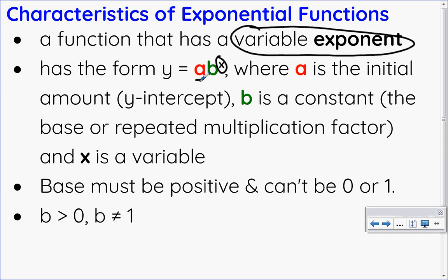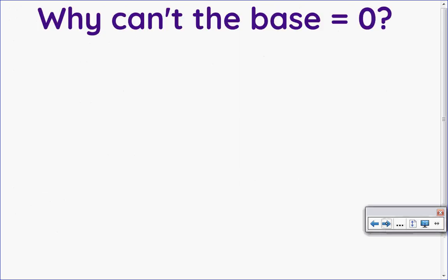Now let's talk about the base of an exponential function. It has to be positive, and it can't be zero or one. So altogether we say that the base is greater than zero but can't equal one. Let's look at why that is.